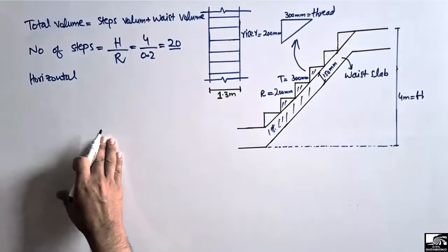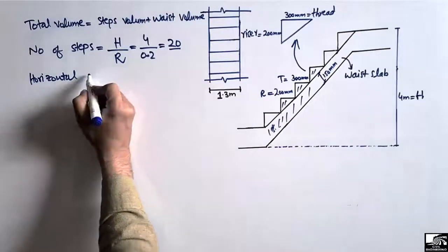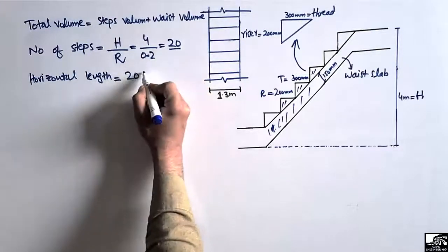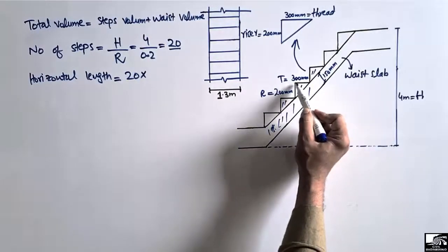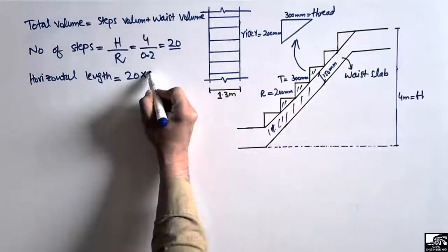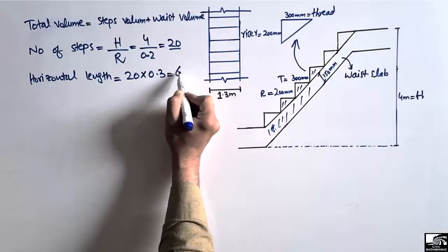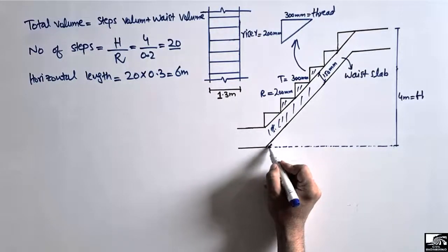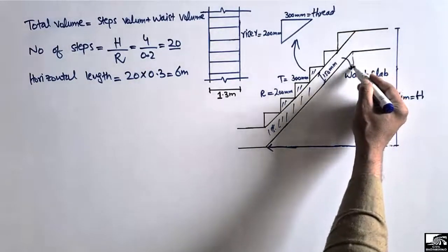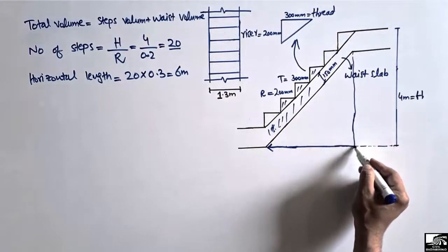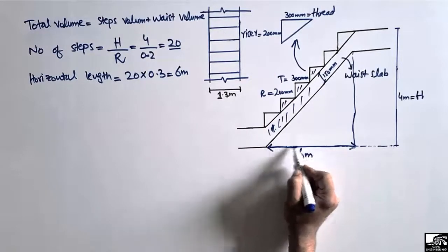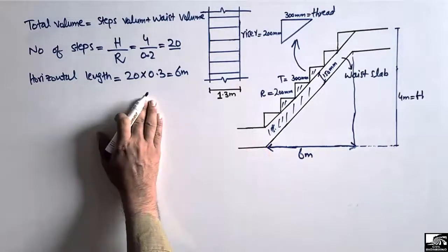Next, we find the horizontal length of the staircase. It equals the number of steps multiplied by the tread. The tread dimension is 300 mm, which is 0.3 meters. So 20 multiplied by 0.3 gives us 6 meters. This horizontal distance from start to end of the staircase is 6 meters.